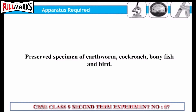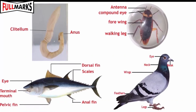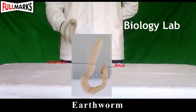Apparatus required: preserved specimens of earthworm, cockroach, bony fish, and bird. Procedure: observe the given specimens carefully, record the characteristics, draw a neat labelled diagram, note one adaptive feature and one specific feature of each animal, and write its phylum.